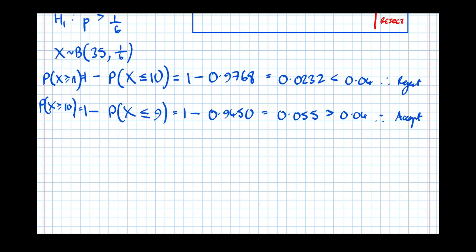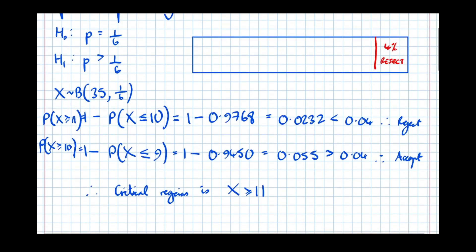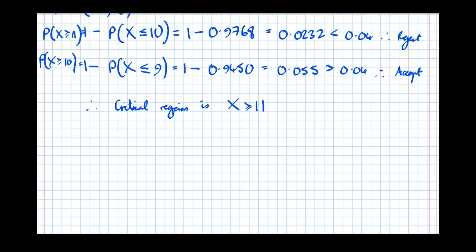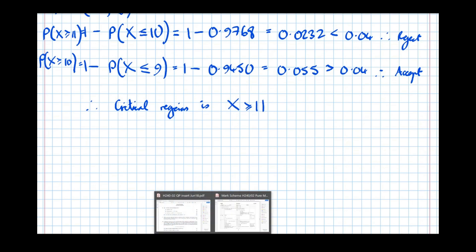So now we can conclude that anything greater than or equal to 11 will be rejected. We've showed it crossing from greater than or equal to 10, which is an accept, to greater than or equal to 11, which is a reject. Therefore, and really be sure to write this out, critical region is X greater than or equal to 11. And that's all the marking criteria fulfilled. That's everything we need to get the marks. Let's just analyze the mark scheme, though, to make sure that we know that we are actually getting the marks.